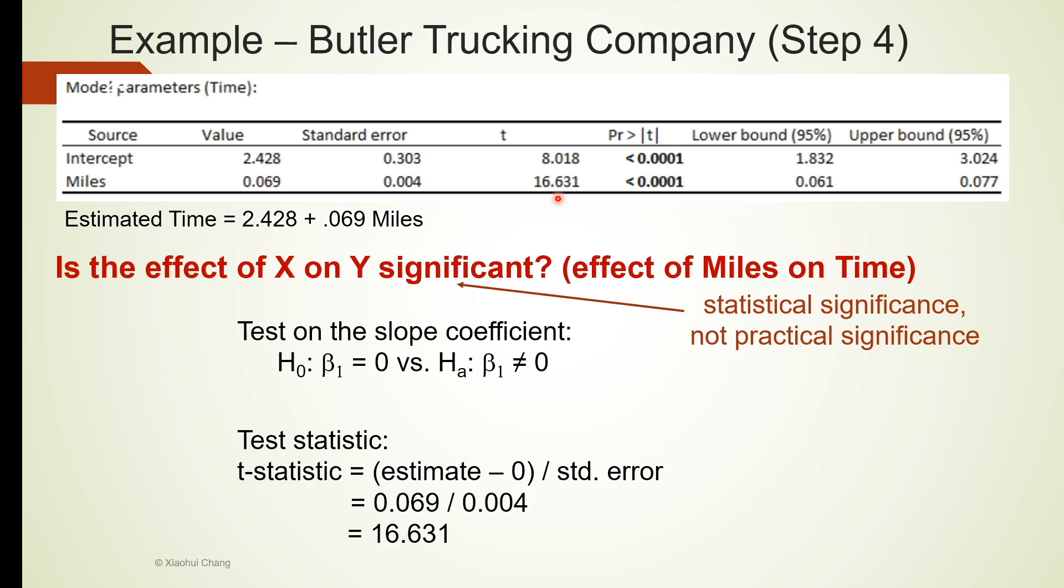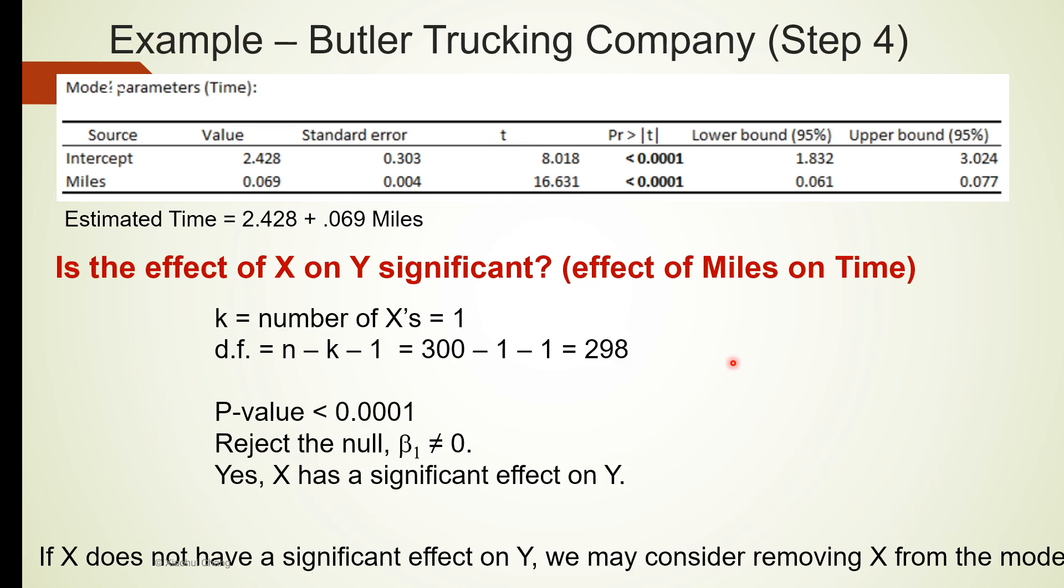16.631 is a relatively large number, and this test is certainly a t-test. For t-test or t-distributions, we usually need to talk about degrees of freedom. Degrees of freedom for regression analysis is sample size minus the number of x used in the model, and minus 1. Our sample size for the trucking company example is 300. The number of x used in this regression model is 1 because we only use miles to predict time, so only one explanatory or independent variable. So that's 300 minus 1 minus 1 equals to 298.